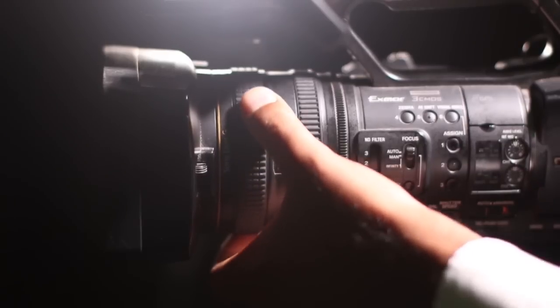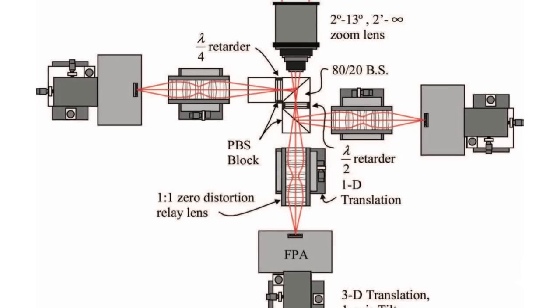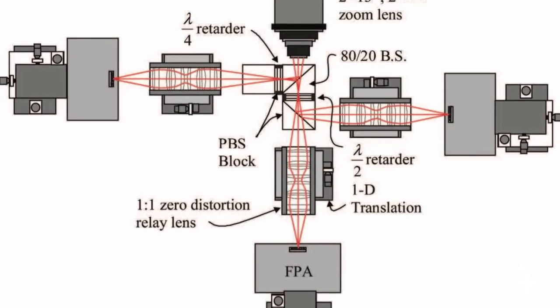Most cameras today can't see polarized light. The few specially designed polarization cameras are expensive, bulky, or reliant on moving parts.